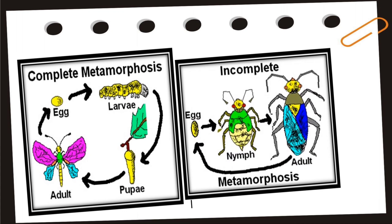Here are some examples of complete and incomplete metamorphosis. The life cycle of the butterfly is considered complete metamorphosis. First, the adult butterfly lays an egg. From the egg comes a larva, which is a caterpillar. It eats lots of milkweed leaves and sheds its skin several times. Then comes the pupa stage, where the caterpillar hangs upside down and makes a chrysalis. Finally, the caterpillar comes out of the chrysalis and becomes a beautiful monarch butterfly.